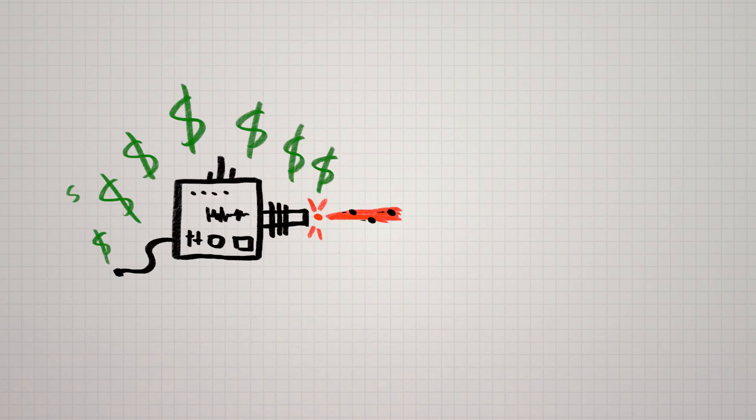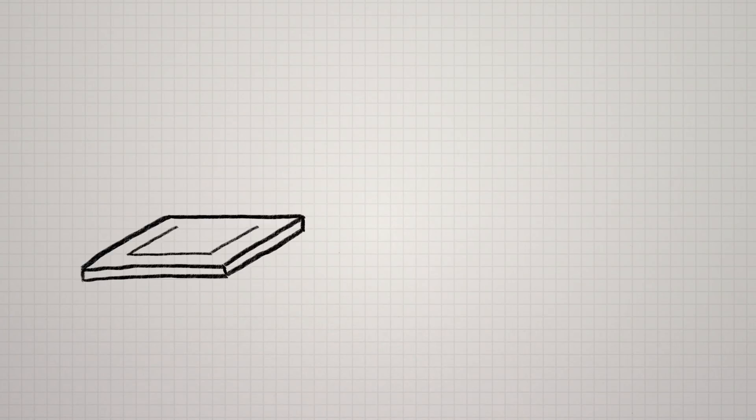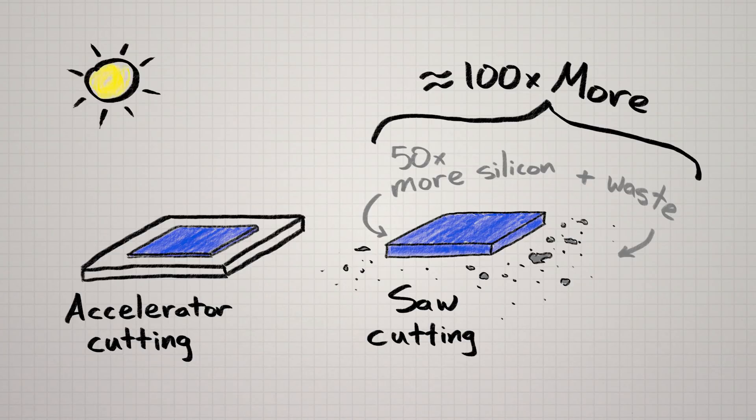Of course, a particle accelerator is much more expensive than a saw, so there must be some upsides to it. The biggest is that by using significantly less silicon per wafer, and not losing any silicon in the cutting process, it's possible to justify using much more expensive silicon that's better at capturing sunlight,